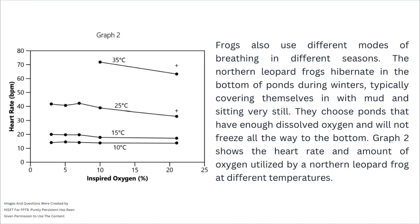These ponds lack fish and are not connected to other bodies of water. Frogs also use different modes of breathing in different seasons. The northern leopard frog hibernates at the bottom of ponds during winter, covering themselves in mud and sitting very still, choosing ponds with enough dissolved oxygen that won't freeze all the way to the bottom. Graph 2 shows the heart rate and oxygen utilized at different temperatures.